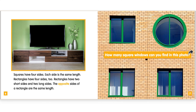Squares have 4 sides. Each side is the same length. Rectangles have 4 sides too. Rectangles have 2 short sides and 2 long sides. The opposite sides of the rectangle are the same length. How many square windows can you find in this photo?